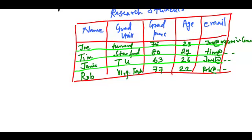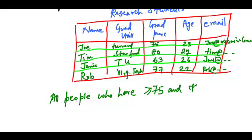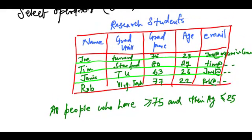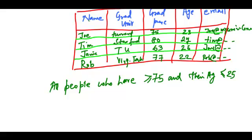Now if suppose I want to find all people who have graduation percentage greater than equal to 75 percent and their age is less than equal to 25, how do I use a relational algebra expression to find this set of information?